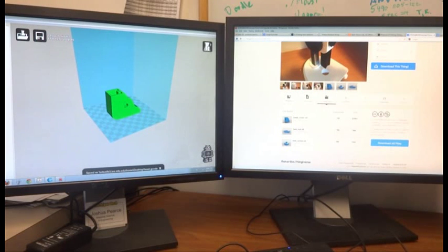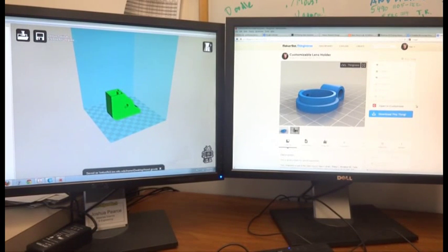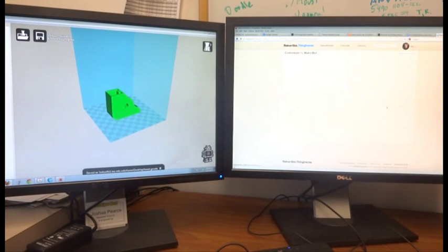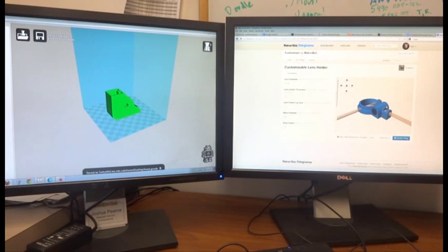You pick the one that you want, download it, and then it's set up ready to print. Let's say that you're interested in something like this customizable lens holder. You can open it in customizer, which is an application that allows you to make it exactly what you want.